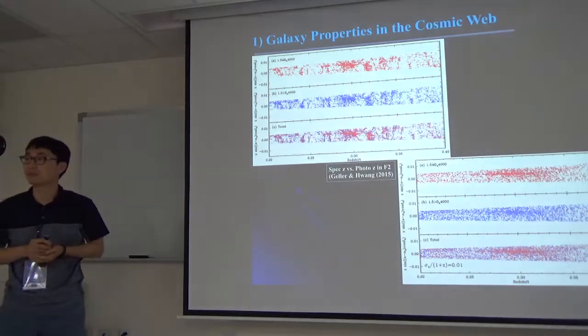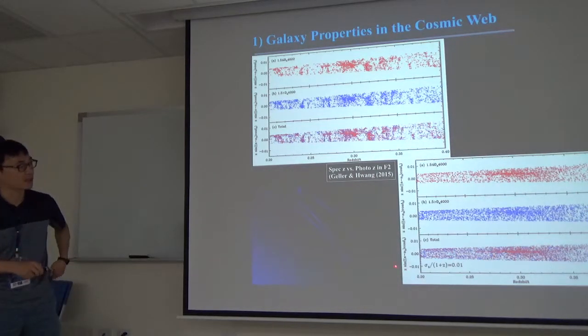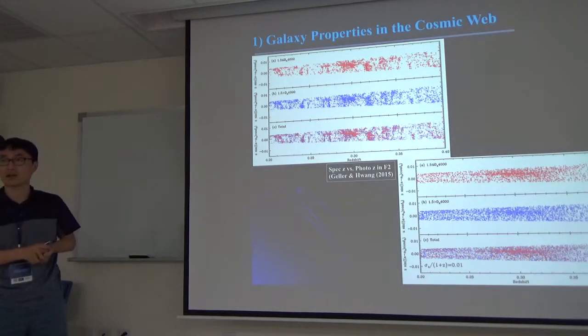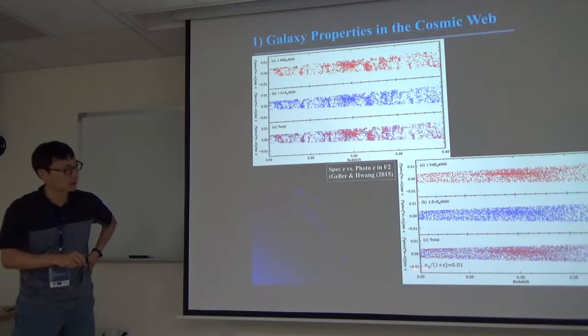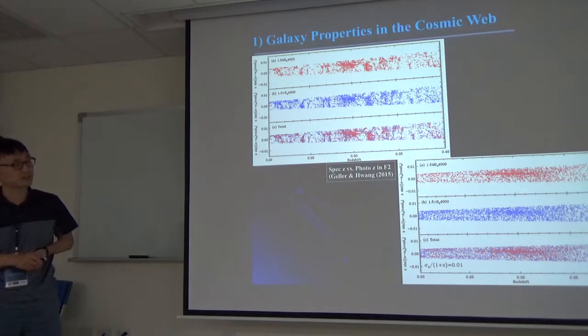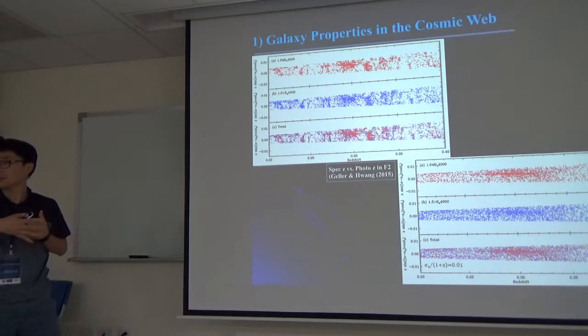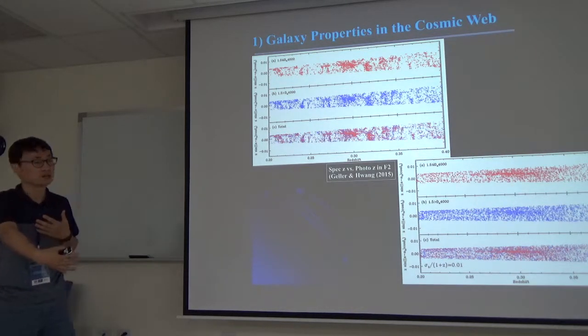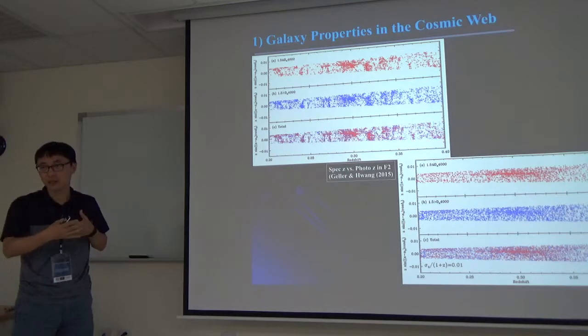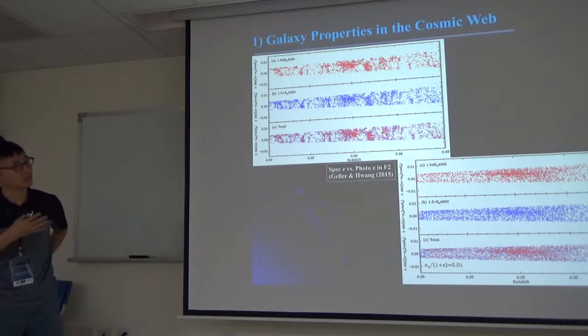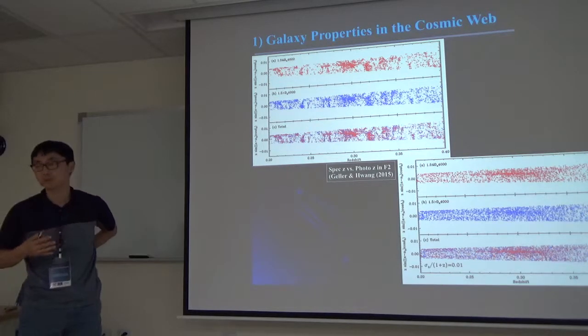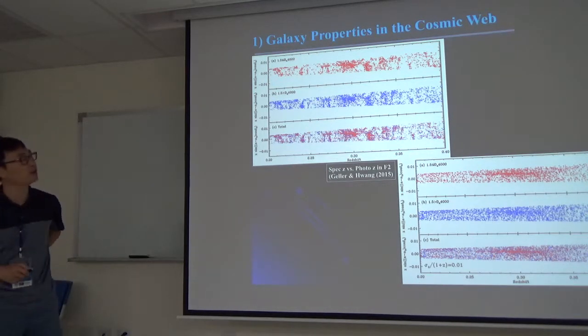Now if you make a similar plot but based on photometric redshifts, in this case I just made a fake photometric catalog where sigma z, delta z is 0.1. You don't see any large structure, right? Meaning that of course you can still study the gas properties statistically, but it's very difficult to study gas properties as a function of cosmic web.